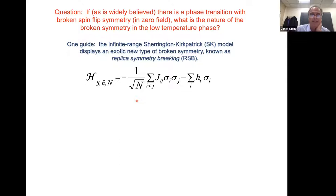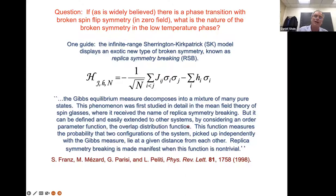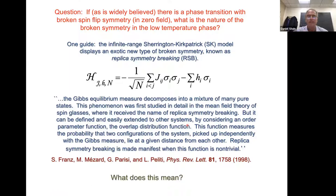Here is a description of the Parisi solution of the Sherrington-Kirkpatrick infinite-range mean field model of spin glasses by some of the originators of replica symmetry breaking, including Parisi. They say the Gibbs equilibrium measure decomposes into a mixture of many pure states. Instead of an order parameter, you have an order parameter function called the overlap distribution function, and this is non-trivial in the spin glass. I'm going to spend the next 15 minutes or so trying to explain what this means.